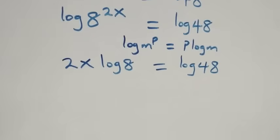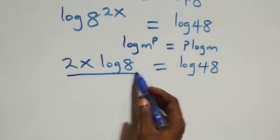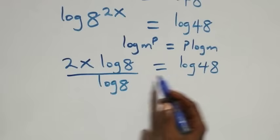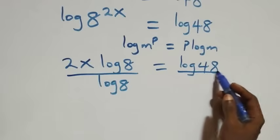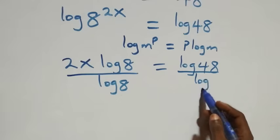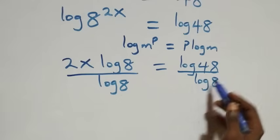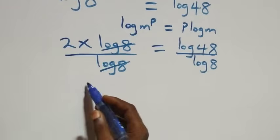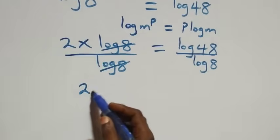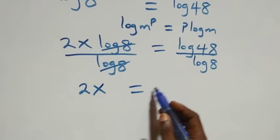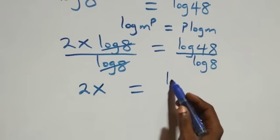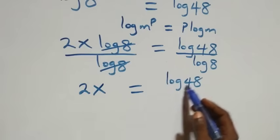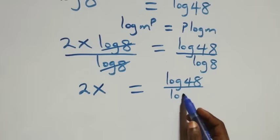The next step is to divide both sides by log 8. Dividing both sides by log 8, the log 8 terms cancel, leaving us with 2x equals log 48 over log 8.